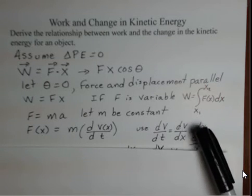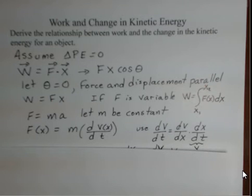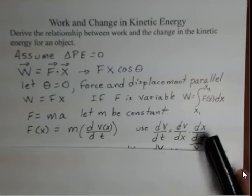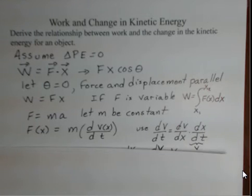We're inserting a dx, an infinitesimal displacement, on the numerator and the denominator, and then you can recognize out here dx over dt is the velocity.